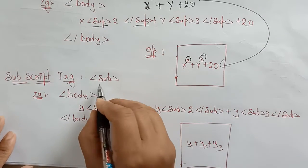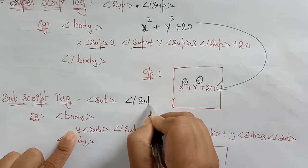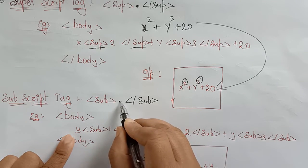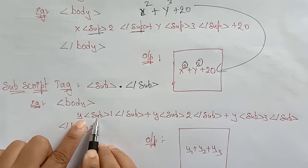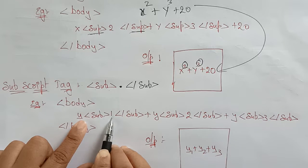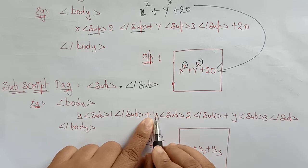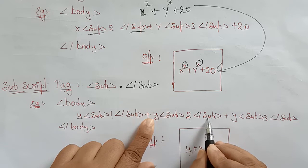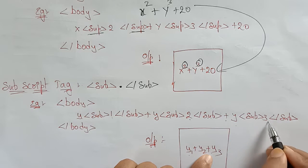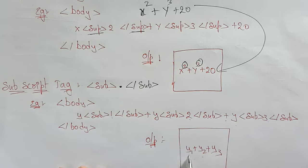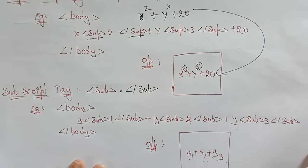Next is the subscript tag. The subscript is written as `sub` instead of `sup`. It also has an opening and closing tag. Whatever message is written between them is printed below the term. For example: y with subscript 1 gives y₁, then y with subscript 2 gives y₂, and y with subscript 3 gives y₃. So the output is y₁ + y₂ + y₃.